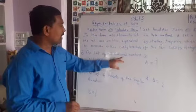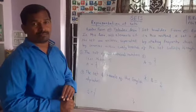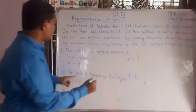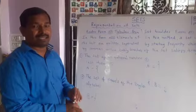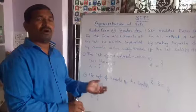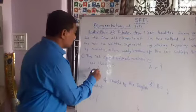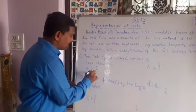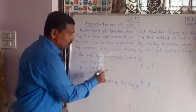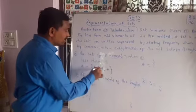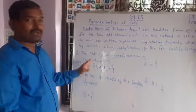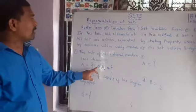Let us take the set of all natural numbers less than 5. Natural numbers start from 1. So less than 5 gives us 1, 2, 3, 4. We write the set named A within curly brackets: A = {1, 2, 3, 4}. The elements are written by putting commas within the curly brackets. This is called roster form or tabular form.